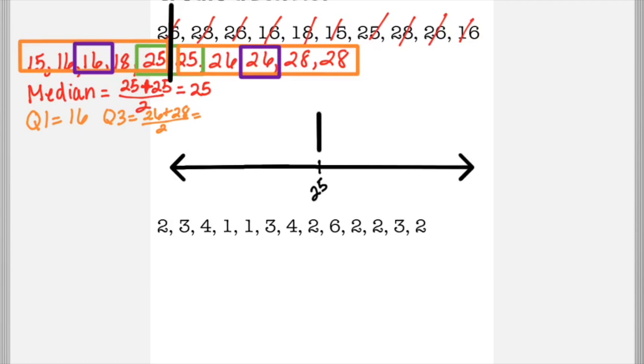We are including those 25s in the quartile one and quartile three, which I made the mistake of not including them. So make sure that you do. When you do that, there's five numbers to the left of the median and five to the right. Quartile one would be 16 because that's the one in the middle and quartile three would be 26.